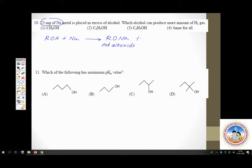To balance this reaction, it would be 2 moles of alcohol giving 2 moles of alkoxide and utilizing 2 moles of sodium. You are asked: between methanol, ethanol, and propanol, which gives more hydrogen gas?